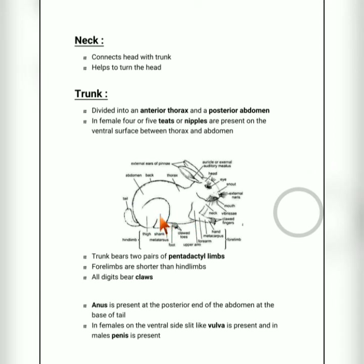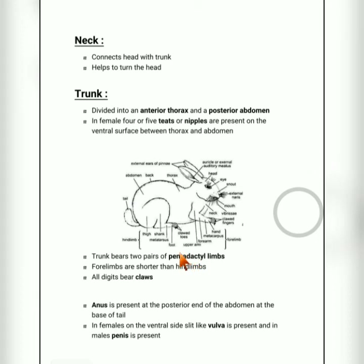In females, there will be a small slit or opening called the vulva, which is the end of the reproductive organ. The trunk also has two pairs of pentadactyl limbs — that is four limbs or legs. Pentadactyl means five-fingered, with five fingers and five toes.